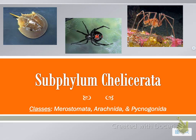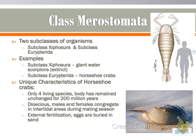The first subphylum we're going to look at is called subphylum Chelicerata. This has three major classes that we're going to examine. First up, Merostomata. There are two subclasses of these organisms, but only one still currently exists. The giant water scorpions are extinct, so those no longer exist.